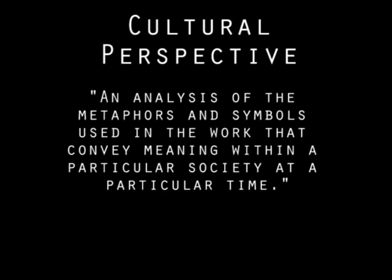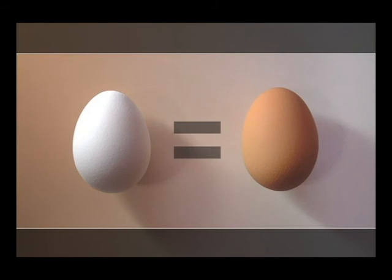The fifth perspective is the cultural perspective: an analysis of the metaphors and symbols used in the work that convey meaning within a particular society at a particular time. Here we have two eggs. What is the message or symbolism in this picture? One take on this photo is that an egg is an egg, no matter what the color, and the same applies to people. We are all people at the end of the day, no matter where we're from, what color we are, what shape we are — we all have the same thing in common. We're people.